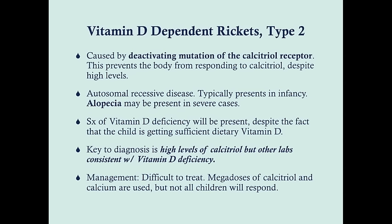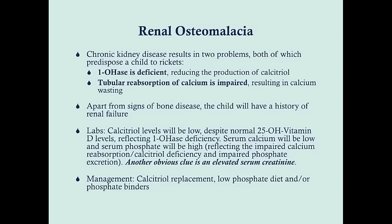Management of VDDR Type 2 is much more difficult because the receptor is endogenous. The best approach is to try to saturate the remaining normal receptors with mega doses of calcitriol, combined with extra calcium supplementation to maximize absorption. However, not all children respond, and many will need to be managed symptomatically.